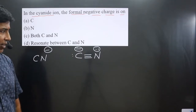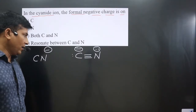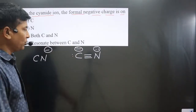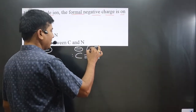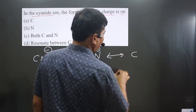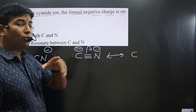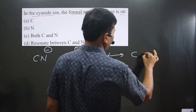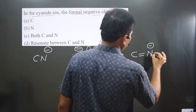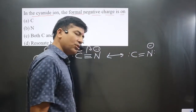Now, carbon is having a formal charge of minus one. Since nitrogen is more electronegative than carbon, it will pull the electron density. As a result, carbon loses electron density, and this negative charge moves towards nitrogen. We are then left with only a double bond on nitrogen, and the negative charge shifts to nitrogen. This gives us the second resonance structure.